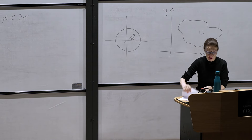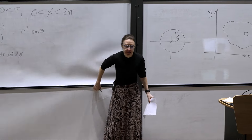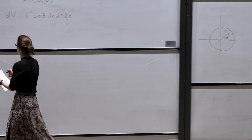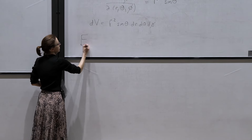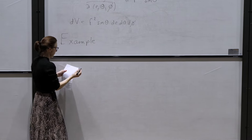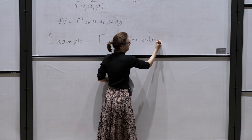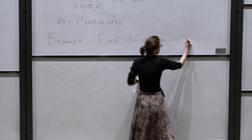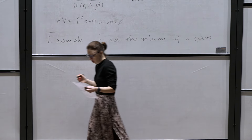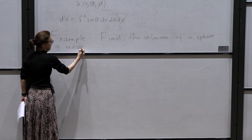Let's think about using these coordinate systems with examples. Suppose we want to find the volume of a sphere of radius a. Obviously we know what the volume of a sphere is, but let's use our approach of changing coordinate systems to show that we are indeed right.